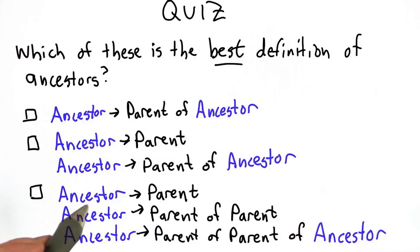The third has three rules, ancestor is replaced by parent, ancestor is replaced by parent of parent, and ancestor is replaced by parent of ancestor.